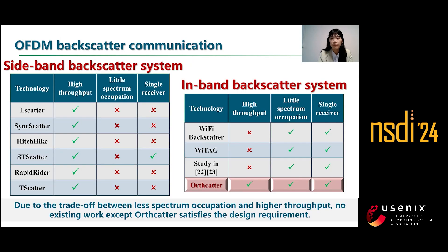Among different types of backscatter systems, OFDM backscatter has received considerable attention due to the wide deployment of OFDM exciters. We envision that a ready-to-use OFDM backscatter system should follow three design requirements. First, it should provide a data rate of at least hundreds of thousands of bits per second to support high data rate applications such as telecommuting and live streaming. Second, it should transmit in the original channel without occupying additional frequency resources. Third, it should support wide radio demodulation. However, no existing works except O-Scatter satisfy all three requirements simultaneously.